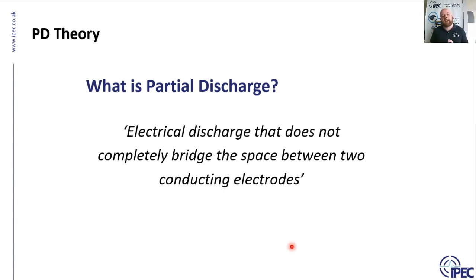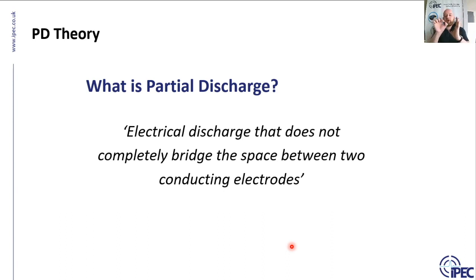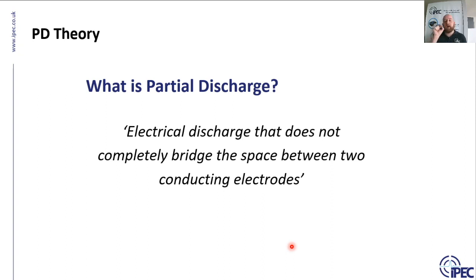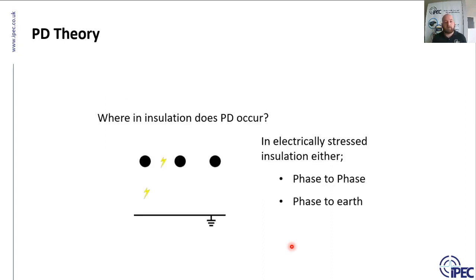Partial discharge is an electrical discharge that doesn't completely bridge the space between two conducting electrodes. Essentially, if you've got a conductor and maybe another phase, an earthing point, or two electrodes, a partial discharge is a discharge occurring in between those — not completely bridging the gap, but occurring at some point in between them. It's a point of electrical stress where PD is occurring.